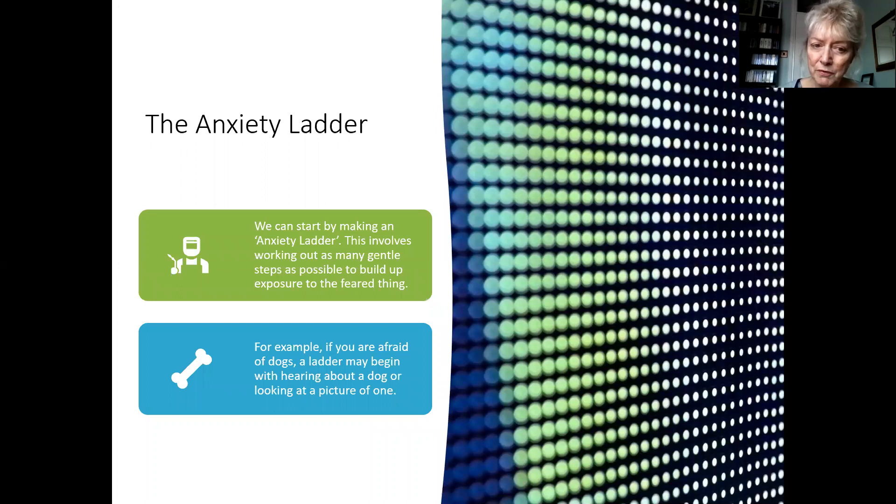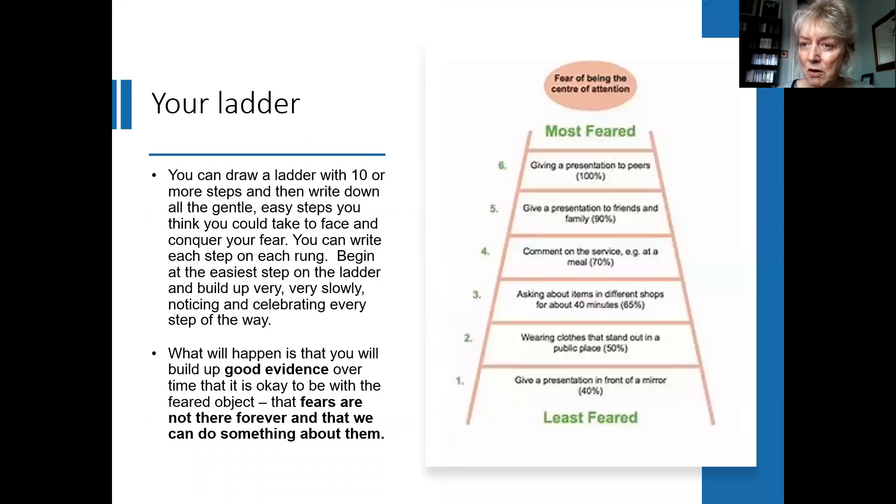So for example, if you were frightened of dogs, then your ladder may begin with hearing about a dog or reading about it or looking at a picture of a dog. That might be the bottom rung of your ladder. So if you want to have a go at this very useful strategy, I think you can draw that ladder out for yourselves with 10 or more steps, then write down all the gentle easy things that you could do to face and conquer the fear that you would put right at the top.